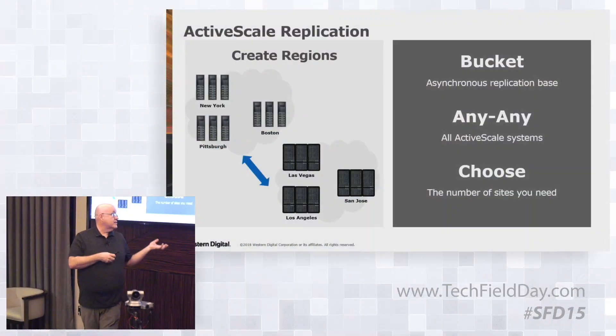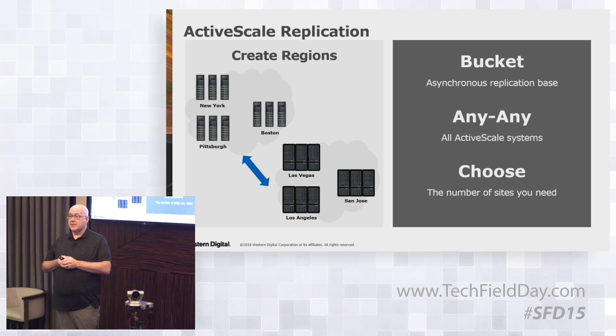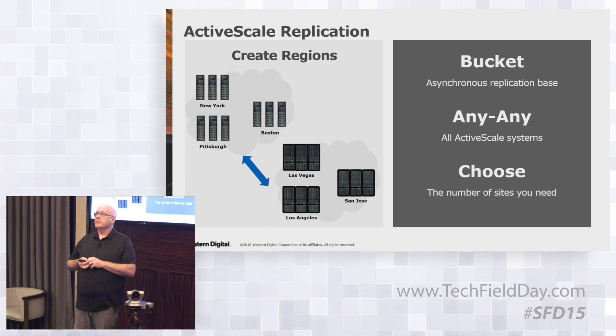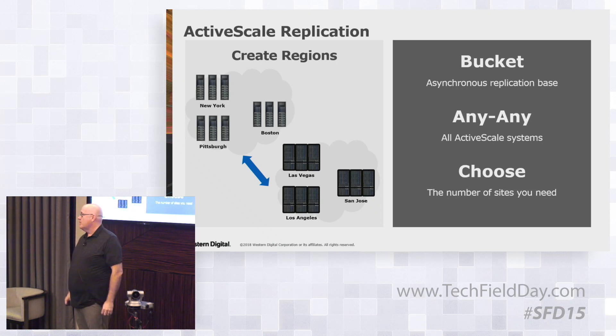We can't do GeoSpread with more than three sites today, but what we can do is create regions and replicate between two sets of those. With ActiveScale 5.2, we introduced replication — it's replication between any ActiveScale system and any other ActiveScale system, synchronous or asynchronous. If you have availability zones, you can set up something like an availability zone in the Western US and an availability zone in the Eastern US and replicate between them at the bucket level, choosing what to replicate based on your needs.